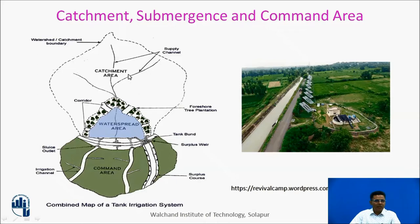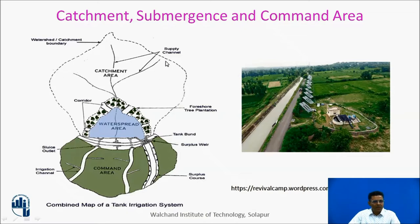This particular slide gives us the total idea about the catchment, submergence, and command area for an irrigation scheme. Here we find a dam which receives water from a river system. This is the main river, these are the tributaries, and this is the catchment area which contributes water to this particular reservoir. The reservoir spread — that is, the spread of water in the reservoir — is shown here.